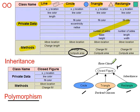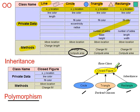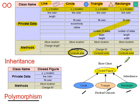With inheritance, here's an example. I could set up a base class called closed figures, and in that set up attributes such as the x and y location. That is something contained in each of those subclasses. So if I have that attribute, circle, triangle, and rectangle would inherit each of those attributes. I could also have a method called compute area in that base class, and circle, triangle, and rectangle would inherit that compute area.